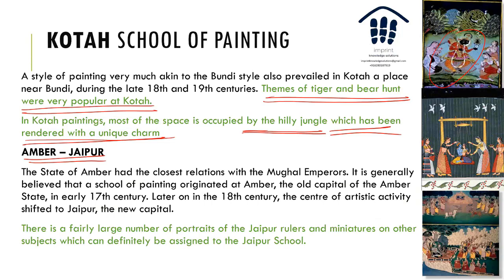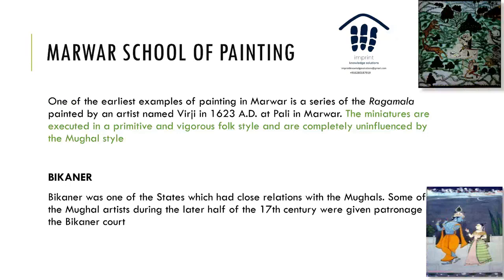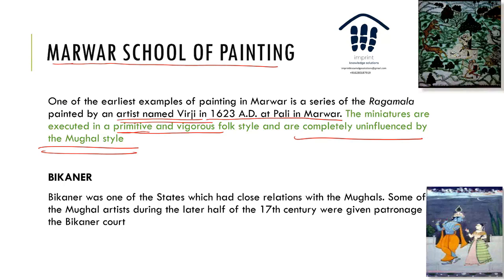The Amber and Jaipur style of paintings have a very close relationship with the Mughals, with a large number of portraits and miniatures assigned to the Jaipur school, though themes from Krishna's life remain prevalent. The foundation of the Rajasthani school is the Mewar school, as it is the earliest example — Mewar was captured last by the Mughals. Around 1623, artist Virji painted the Ragamala; the miniatures are primitive and vigorous, uninfluenced by the Mughal style. The Bikaner style also has some Mughal patronage.